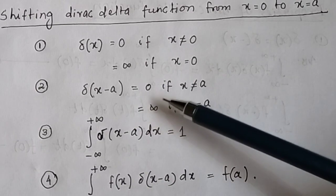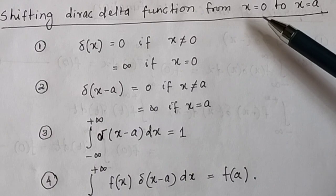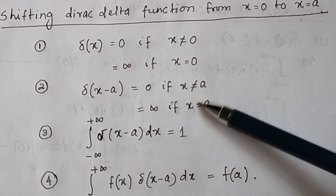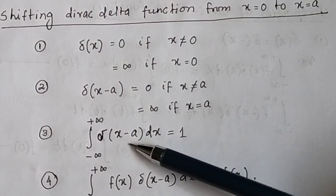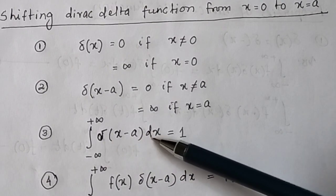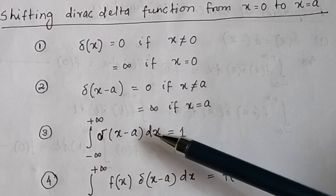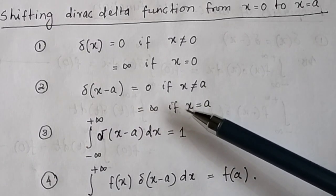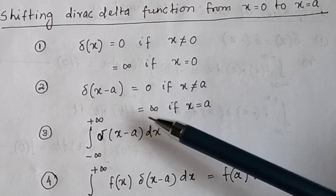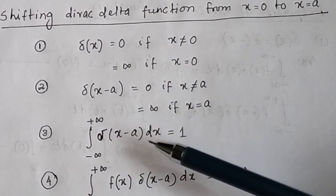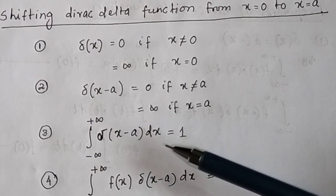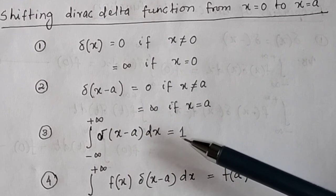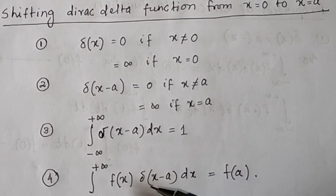Then what are the identities of the Dirac delta function if you shift the value of x from x equal to 0 to x equal to a? If you shift x from 0 to a, then the integral of delta(x minus a) dx will be equal to 1, because at x equal to a, delta(x minus a) is equal to infinite. So the area of this Dirac delta function will be equal to 1.